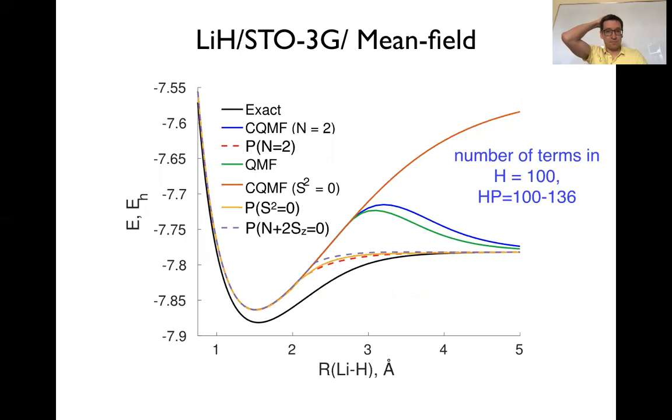Now, more interesting system would be lithium H and we do the STO3G basis again, mean field, similar picture. The black is the exact curve and the red one is the constrained qubit mean field with the singlet as a constraint. So, we are not allowing the symmetry breaking for the spin at least. If we constrain only number of electrons, then there is a symmetry breaking in spin, the blue curve. And then if we don't put any constraints, there is also a symmetry breaking, both in number and spin probably. And if we do projections, then the curves become closer to the exact one, but still there is some way to go.